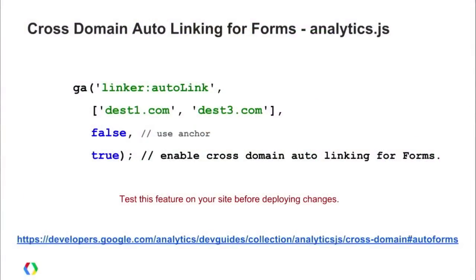The next update is cross-domain auto-linking for forms. We already offer an auto-linking plugin for Analytics.js that automatically appends the necessary parameters to any links pointing to another domain so you can track across domains. What we've added now is support for forms — both GET and POST forms. You add a 'true' argument, and that will append those parameters to the form action as well. Make sure you test this on your site before deploying, as there may be cases where custom JavaScript could cause issues, but it should work in most cases.